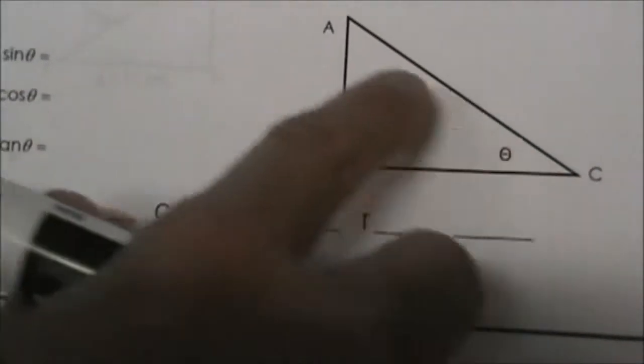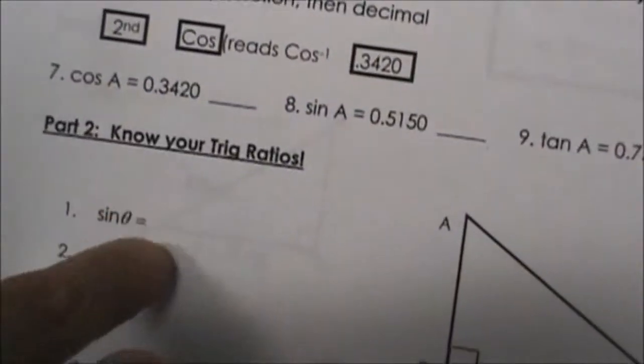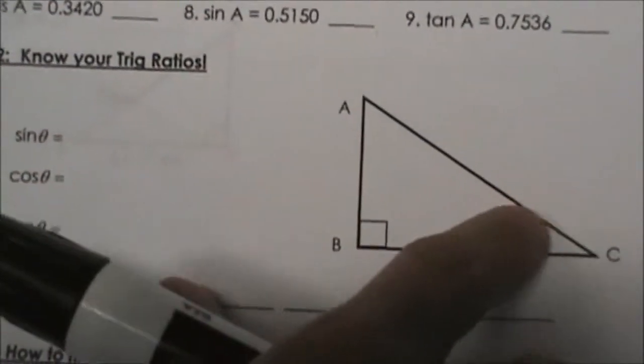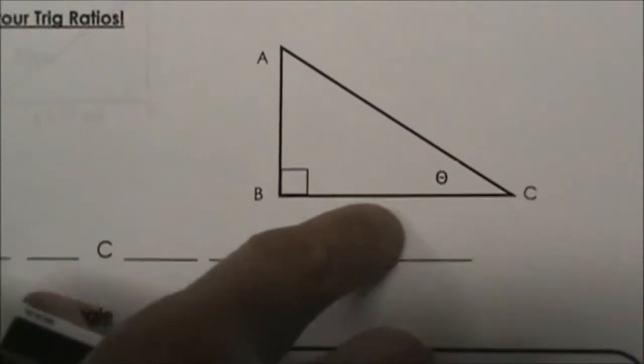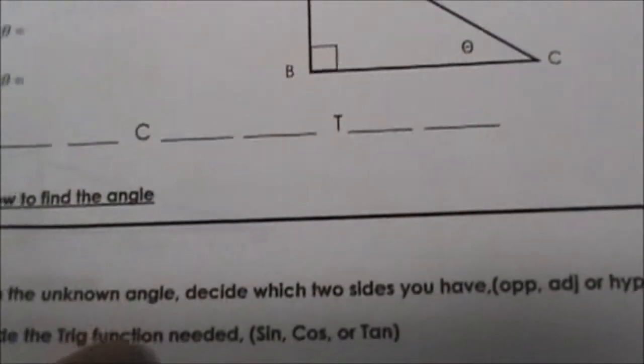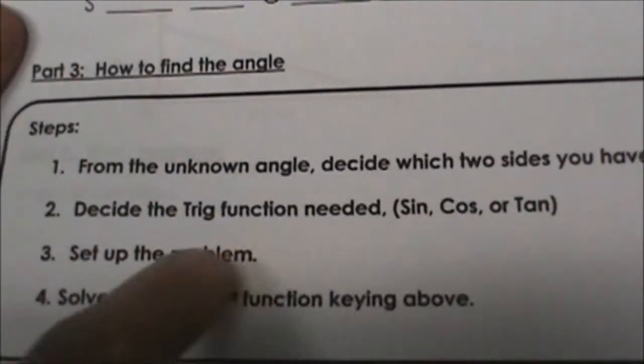So for example, if I have opposite and hypotenuse, I'm going to end up using the sine function. So you look at the two that you're given, or if you have adjacent and hypotenuse, you would use cosine. So that's how you decide which trig function.